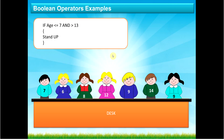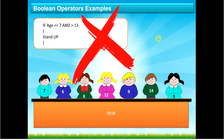Now look closely at this one: if age <= 7 AND age > 13. Think about it — you can't be less than seven and greater than thirteen at the same time. It's impossible. So that condition would return no results at all. This is actually a logical error in the code, because logically it is impossible to be equal to or less than seven and also greater than thirteen.